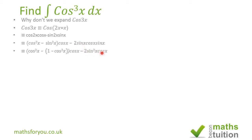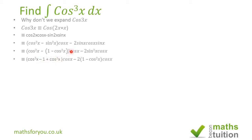Now we need to remove the inside brackets and change sin²x to 1 minus cos²x. When that bracket comes off there, that gives minus 1 plus cos²x, and then cos(x) is there. Minus 2, and as sin²x is 1 minus cos²x, close the bracket, and then cos(x) is there.